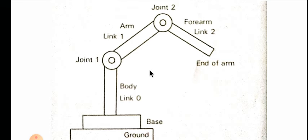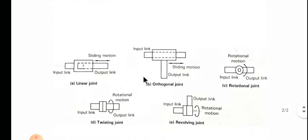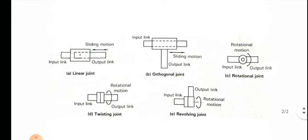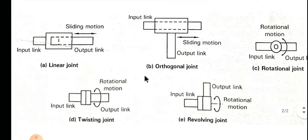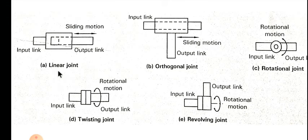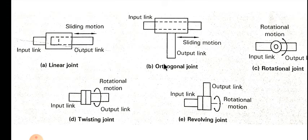Now we are going to study the types of joints. On the screen you are seeing different types of joints. The first one is the linear joint. In a linear joint, the relative movement between the input and output link is a linear sliding motion, with the axes of the two links being parallel. It is also called an L joint. The second one is the orthogonal joint, which also has a linear sliding motion, but the input link and the output link are perpendicular to each other. It is also called an O joint.